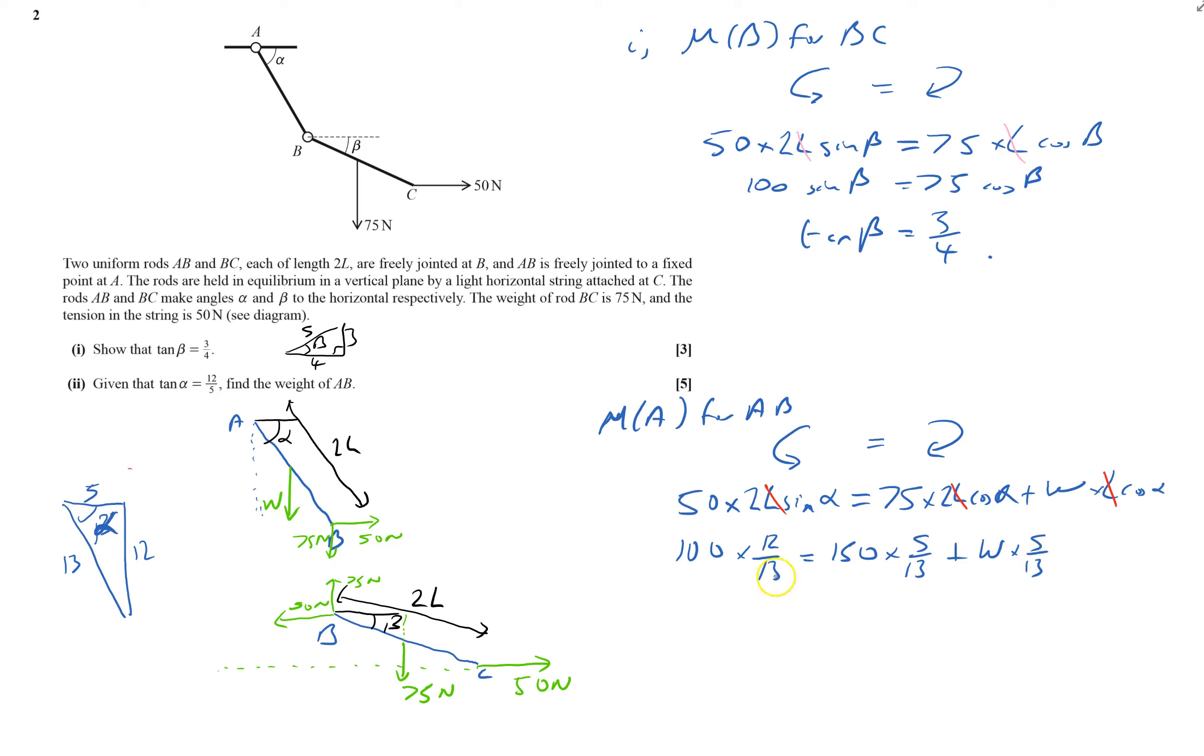Obviously I'll times through by 13. I might as well say what I'm doing. That'll be 1200 equals 750 plus 5W. And that means that 5W equals 450. And so W equals 90 Newtons. And that seems to be quite a reasonable answer. It's in proportion. Pretty good. I'm happy. That's question 2 done. Thank you.